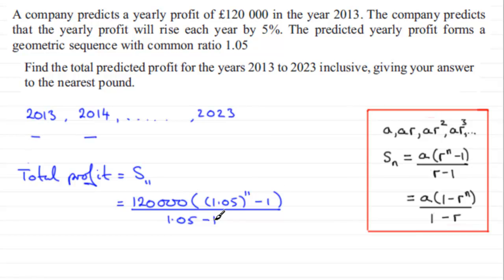Now if you work all of this out on your calculator, what you should find you get is 1,704,814.459. But we've got to give our answer to the nearest pound. And so if you give this to the nearest pound, what you're going to have is £1,704,814 to the nearest pound.